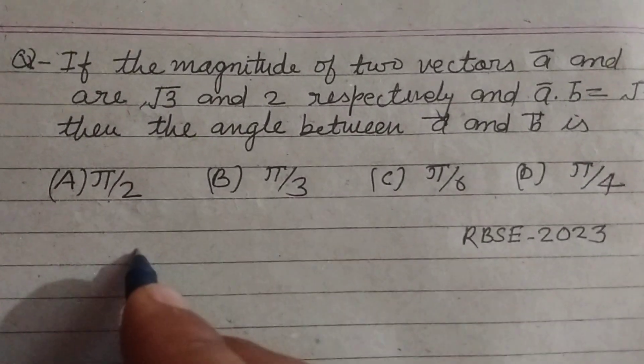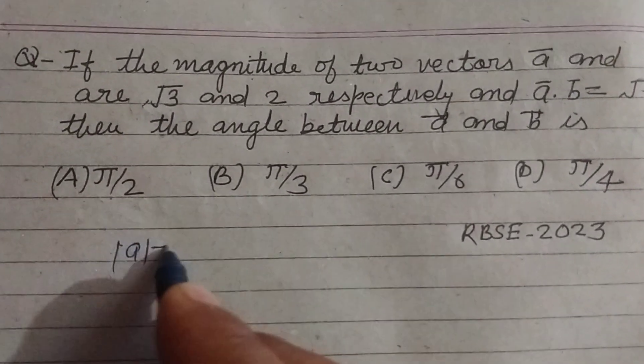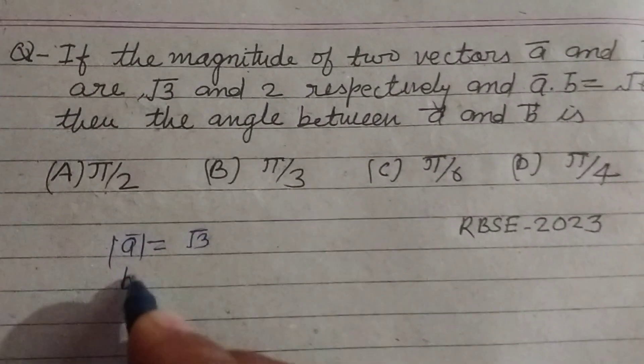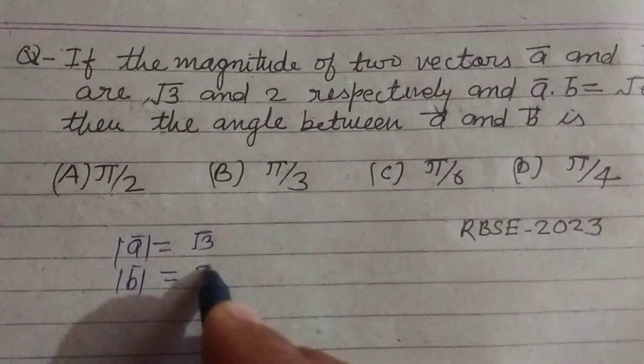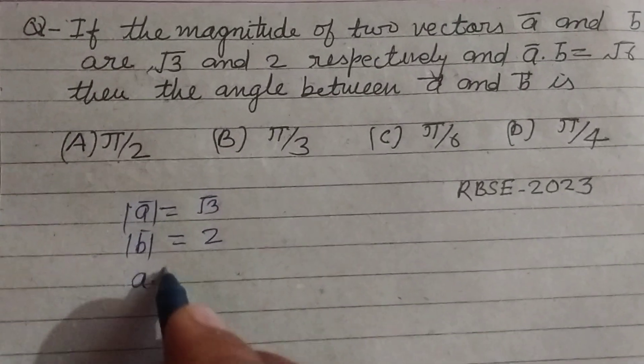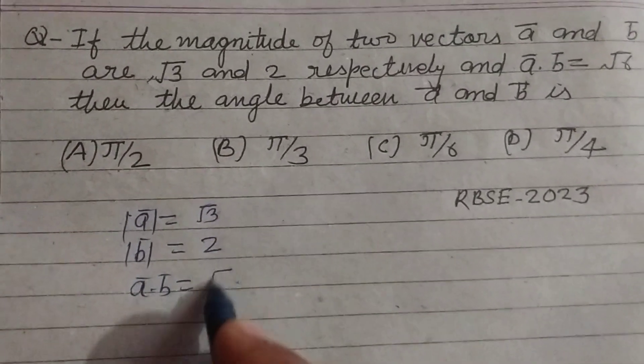So student, here mod of A is given to us √3, mod of B is given to us 2 and A dot B is √6.